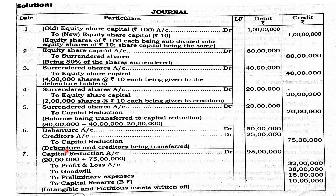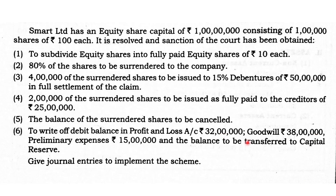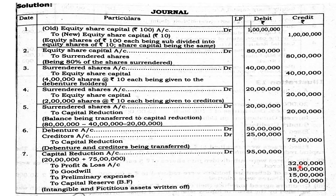Surrendered shares balance transferred to capital reduction account — Rs. 20 lakhs — giving a total in the capital reduction account of Rs. 95 lakhs. This is used to write off: Profit and Loss Account debit balance Rs. 32 lakhs, goodwill Rs. 38 lakhs, and preliminary expenses Rs. 15 lakhs, totalling Rs. 85 lakhs. The remaining balance of Rs. 10 lakhs is transferred to capital reserve.